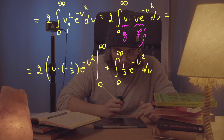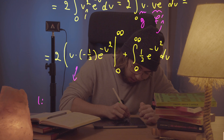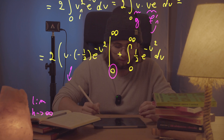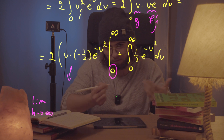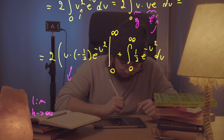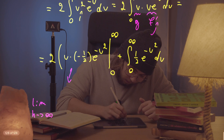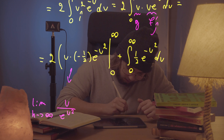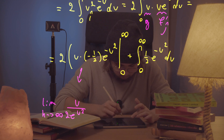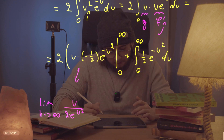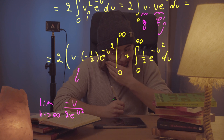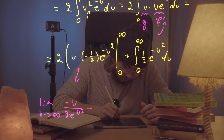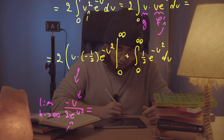Let's evaluate the boundary term using limits — the limit as h approaches infinity. At the lower bound, u equals zero, so the entire term is zero. For the upper bound, we have u over e to the u squared, which is an indeterminate form. Let's apply L'Hôpital's rule and differentiate both numerator and denominator with respect to u.